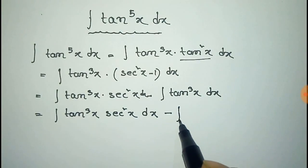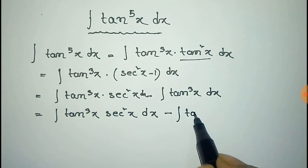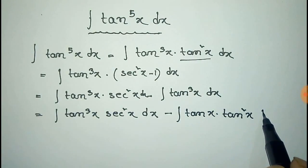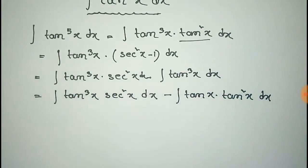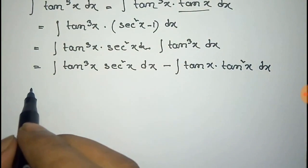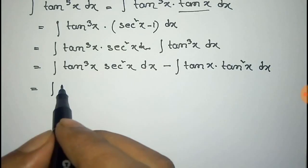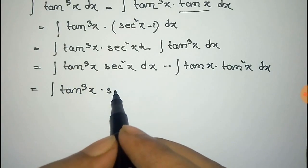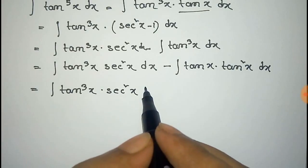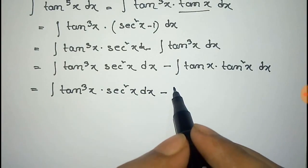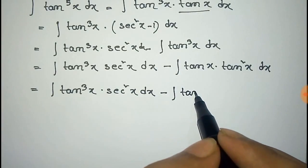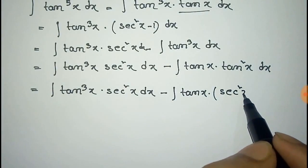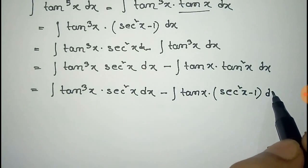We can write this tan cube x as tan x into tan square x. And tan square x can be written as sec square x minus 1 into dx.